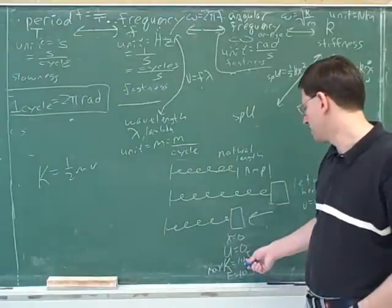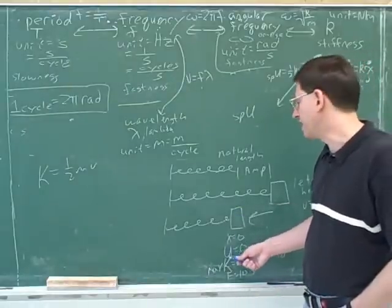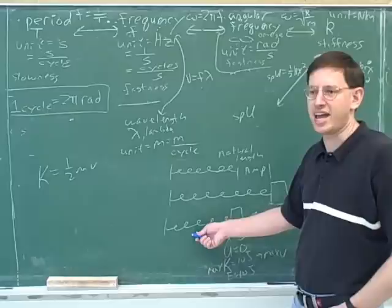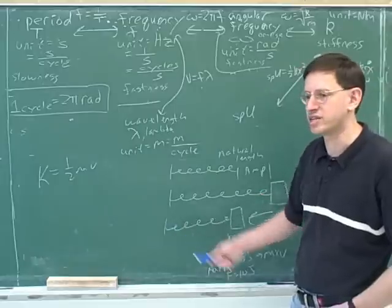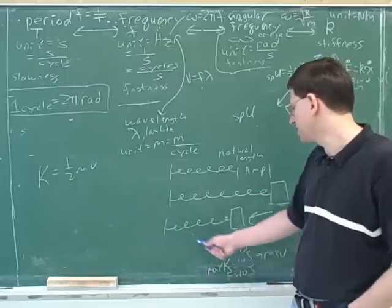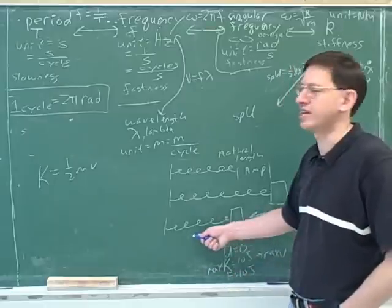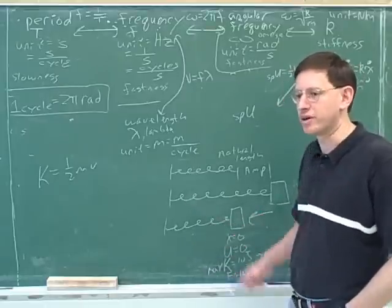Then at the natural length, all the energy is kinetic, and none is potential. And then as we start compressing again, we start slowing down. We know the spring is going to slow down as it starts compressing over here, because it can't compress forever, until eventually the kinetic energy goes to zero again, and all the energy is potential. And then we're going to go back and forth.